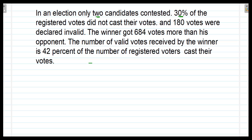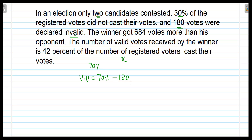Two candidates are there and 70% of registered voters cast their votes. Let the number of registered voters be x, and therefore 70% of x have cast their votes. It is said that 180 votes were declared invalid. Therefore, the valid votes will be equal to 70% of x minus 180, because these are the invalid votes. So total valid votes equals total cast votes (70% of x) minus 180 invalid votes.